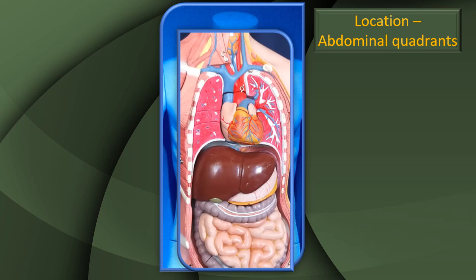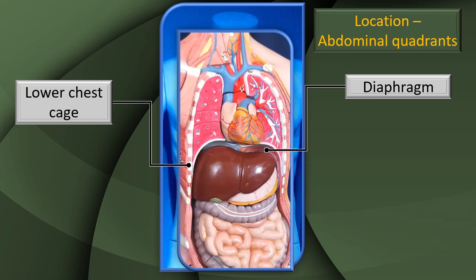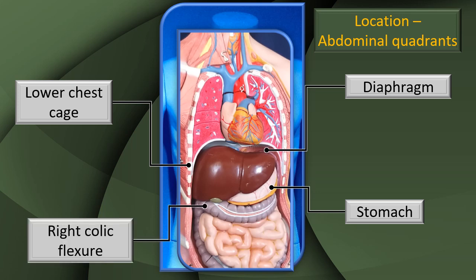Note the close relation of the lower chest cage on the right side — that is very important. The diaphragm on the left side is also important, especially in relation to the left lobe, separating it from the left lung, although it is not as extensive as on the right side. The stomach is immediately below and to the left of the liver, and the right colic flexure with the adjacent transverse colon is immediately below on the inferior surface.